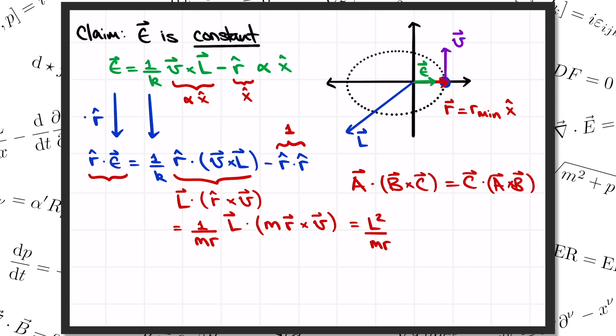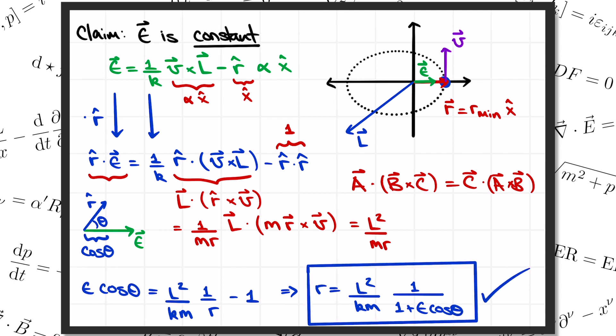Well epsilon, remember, is a vector pointing along the x axis. So when I take its dot product with the unit vector r hat, I'm just going to multiply by a factor of cosine of theta that picks out the component of r hat along the x axis. So I get epsilon times cosine of theta on the left is equal to l squared over km r minus 1. Now, to solve for r, we get l squared over km times 1 over 1 plus epsilon cosine of theta. Just as before, with no nasty differential equations that we have to solve. So that's how this shortcut very quickly lets us determine the equation of the orbit without ever having to solve a differential equation.